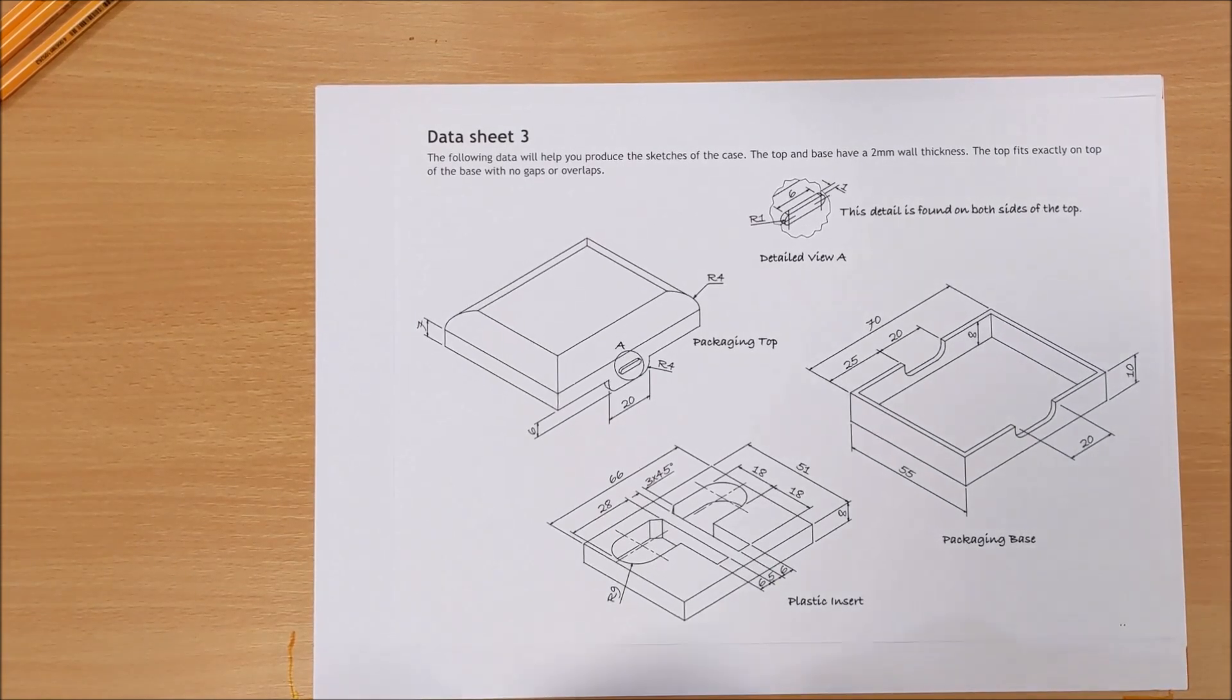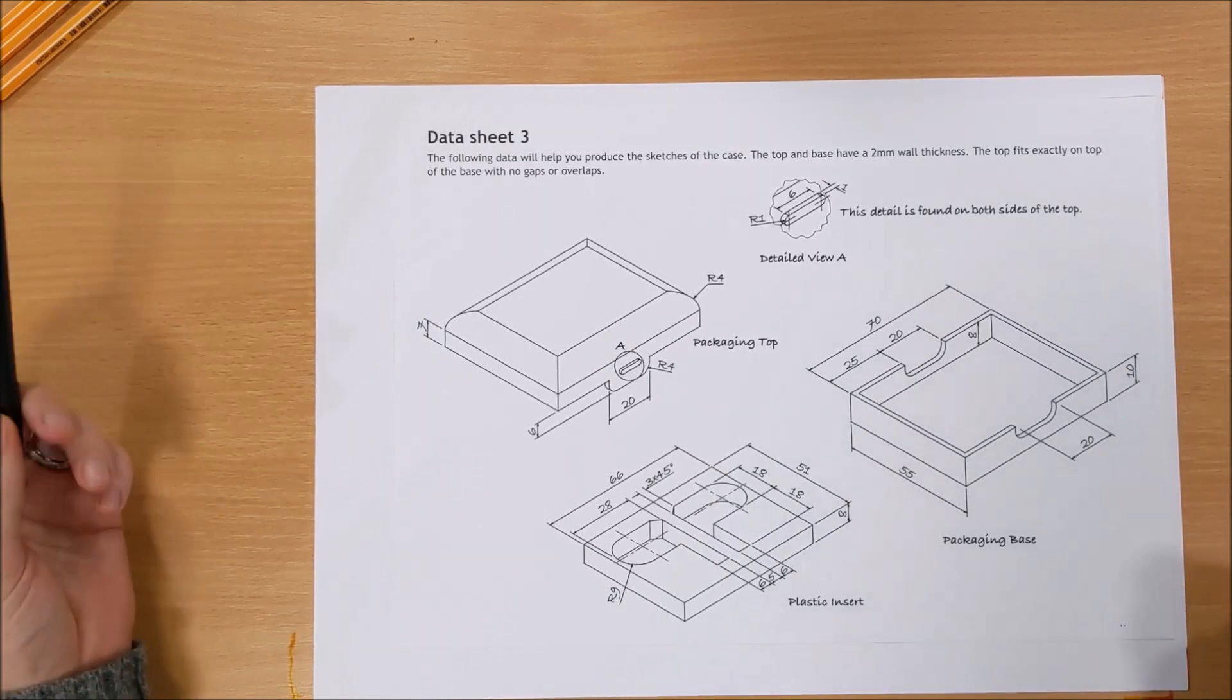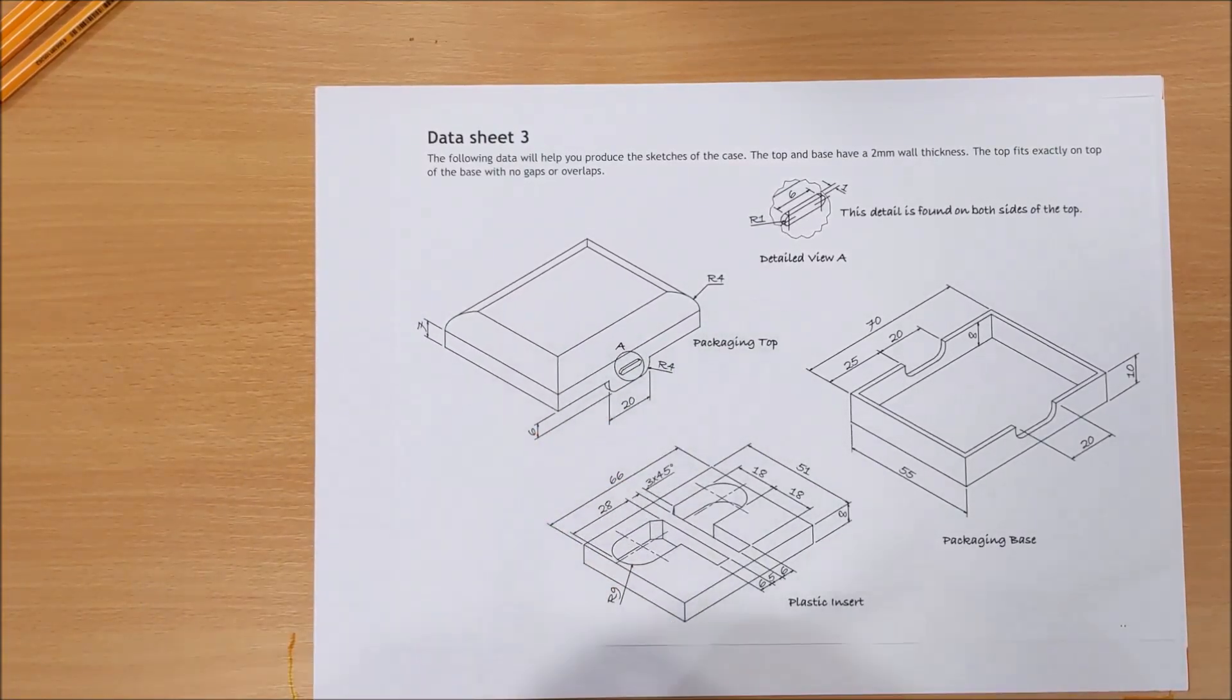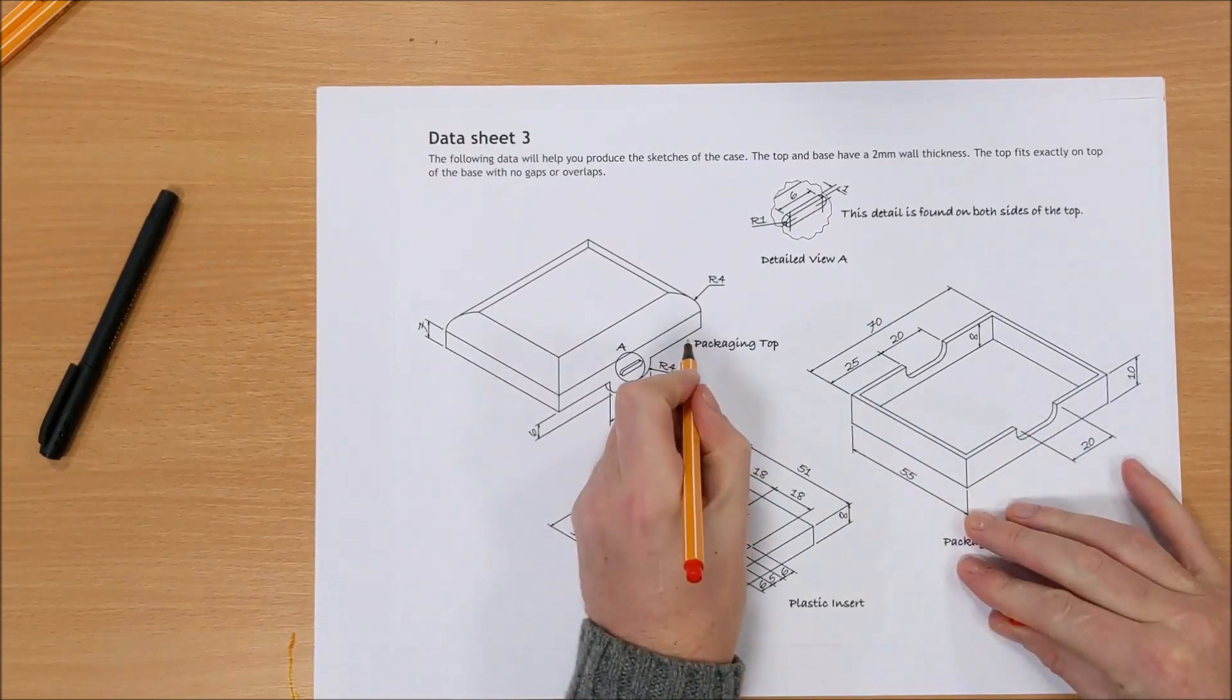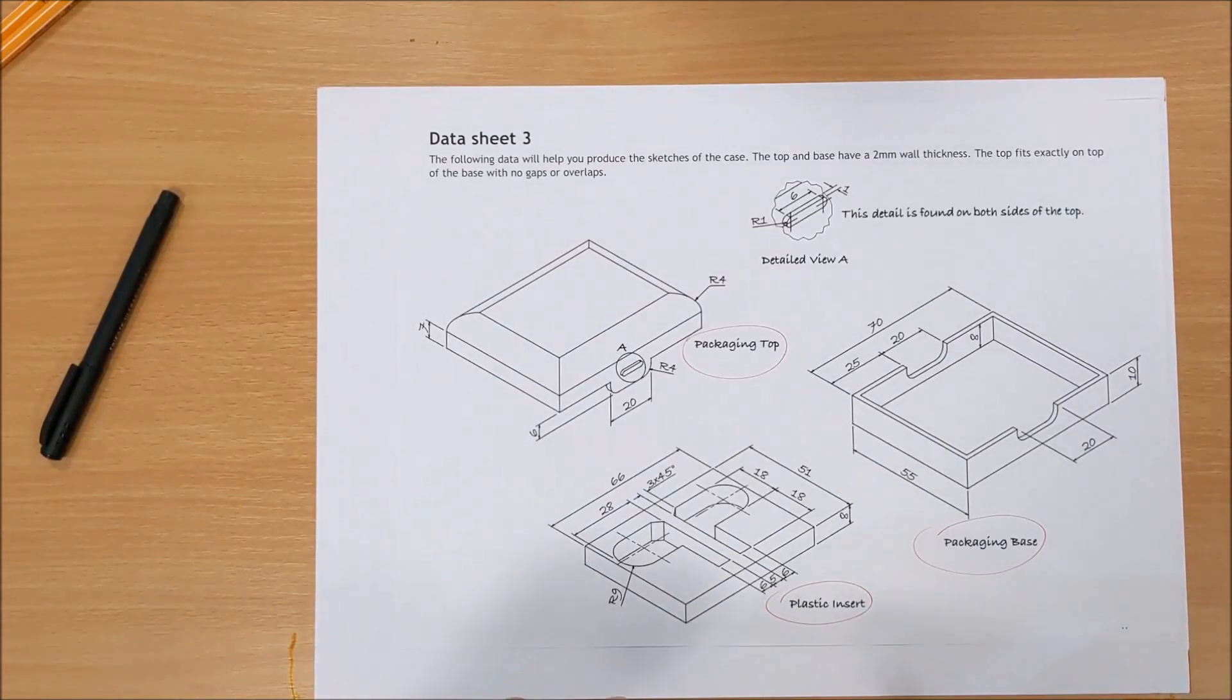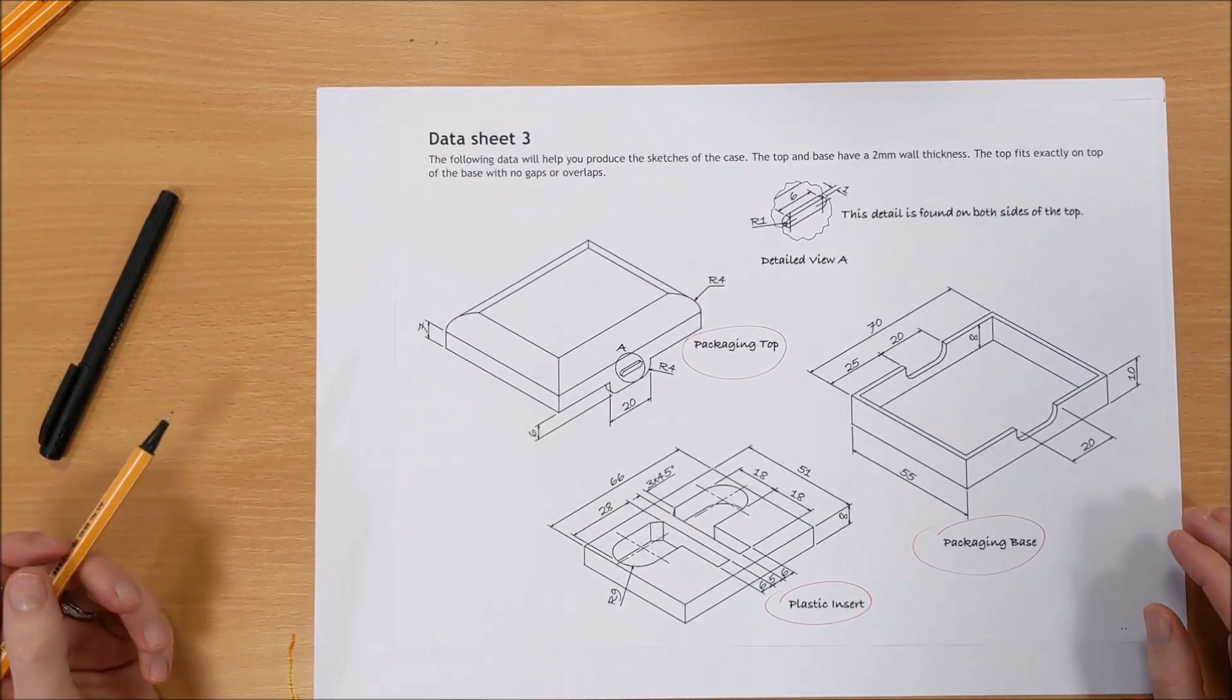This task is all about doing orthographic sketches of a product, and in this case it's an earbuds holder. There is a packaging top and a plastic insert, so take your drawings and any booklet that you get given, and they're yours to add notes and text to. That is important so you can remember everything.